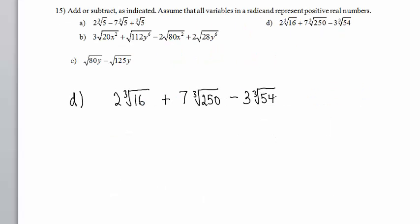Let's look at Part D. We will have to simplify these cube root radicals in order to look for any possible like terms. As it stands, we cannot add or subtract these terms because we don't have the same radicand — the same number under the cube root radical. But perhaps after simplifying we might find like terms. We need to generate a list of perfect cube numbers. 2 to the third power is 8. 3 to the third power is 27.